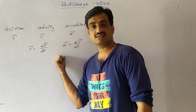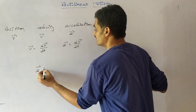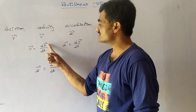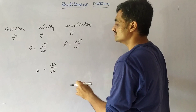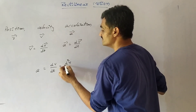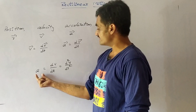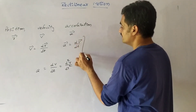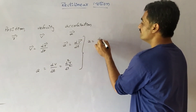Considering magnitudes only and neglecting direction, a = dv/dt. Since v = dr/dt, substituting gives a = d²r/dt², which represents acceleration in terms of displacement. We can also derive another equation: starting from a = dv/dt, multiplying and dividing by ds gives a = (dv/ds)·(ds/dt) = v·(dv/ds).